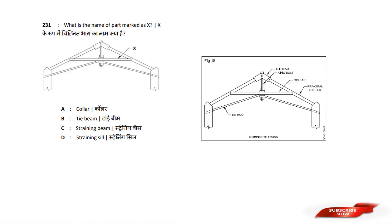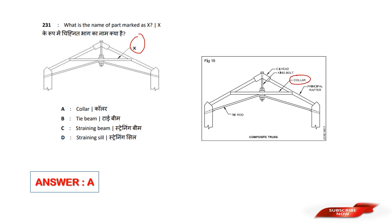What is the name of the part marked as X? Options are: Collar, Tie Beam, Straining Beam, Straining Sill. Answer option A — Collar.